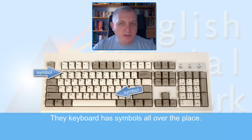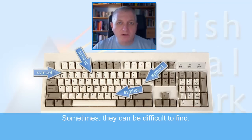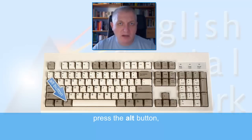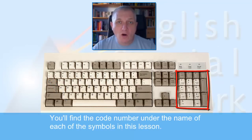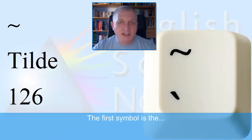This is a keyboard. The keyboard has symbols all over the place. Sometimes they can be difficult to find. If you need a symbol and can't find the key, press the ALT button, hold it down, and then type in the code number on the numeric keypad. You'll find the code number under the name of each of the symbols in this lesson.